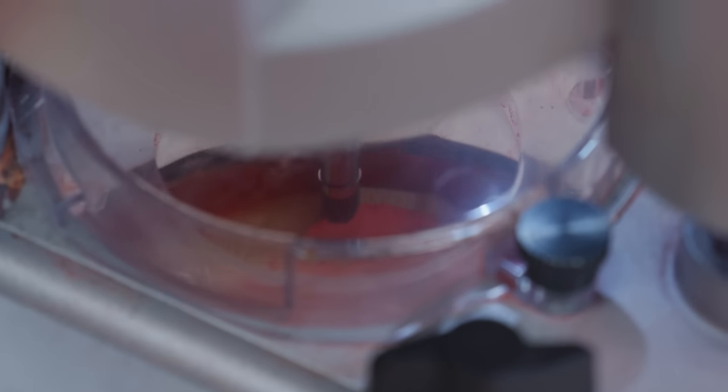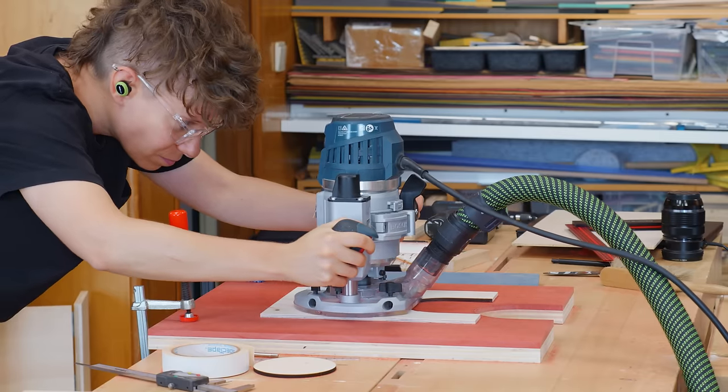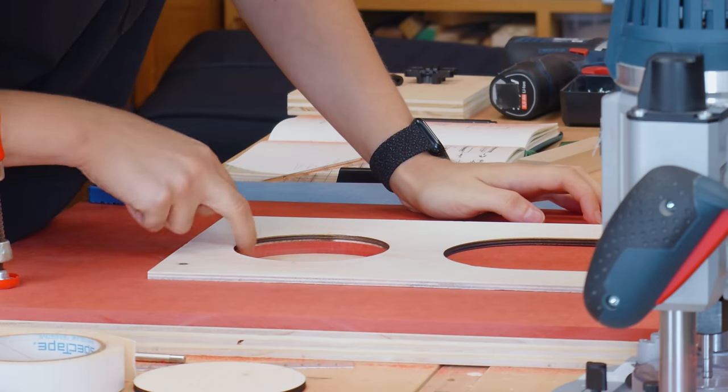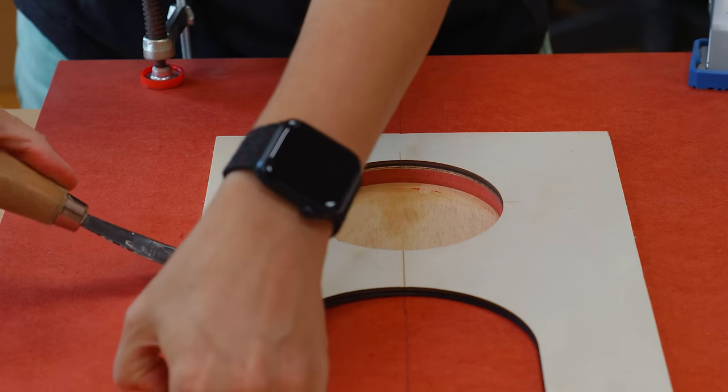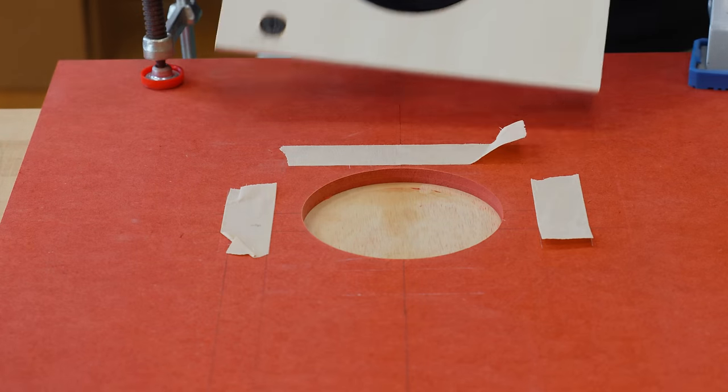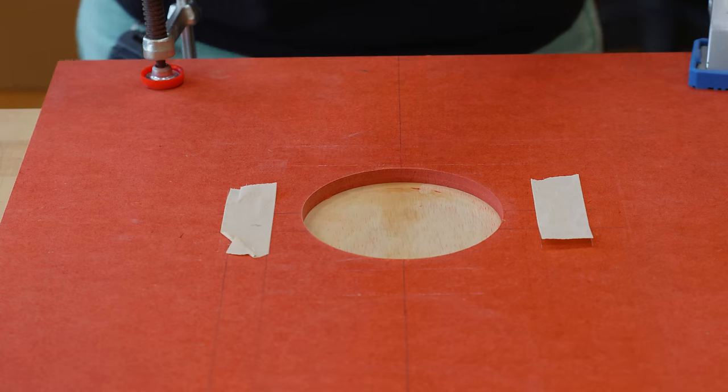I made this in two passes to reach the desired depth. I can remove the template and stick it at the top to copy the half circle on the router table.